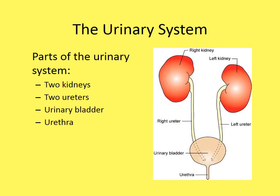The urinary system has four basic structures. It starts at the kidneys, goes down to the ureter, collects into the urinary bladder, and exits through the urethra. While the overall structure is relatively simple, the physiology of the kidney itself can get quite complex.